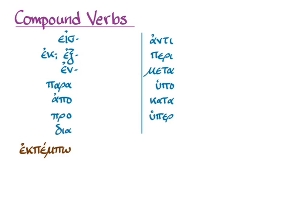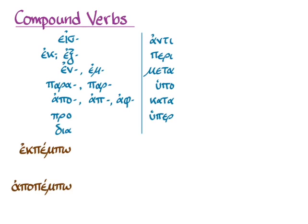Sometimes a prefix will slightly change its form in compounds because of the linguistic comfort level of one consonant before another. So you'll definitely see 'em' instead of 'en' when the meaning is the same — 'in' or 'into.' Prepositions that end in a vowel, like 'para' and 'apo,' will also have a form that doesn't have that final vowel. And sometimes if the consonant at the end of the prefix form is susceptible to contagion from a rough breathing — if it's combined with a verb that starts with a rough breathing — that form will change as well.